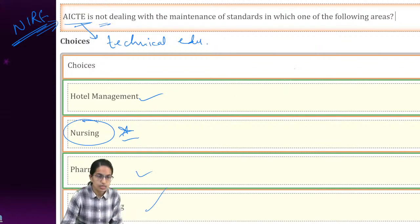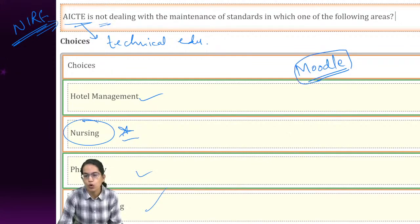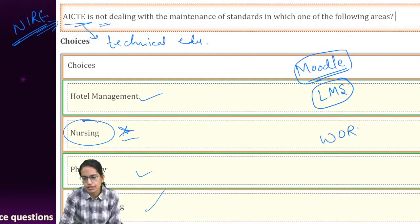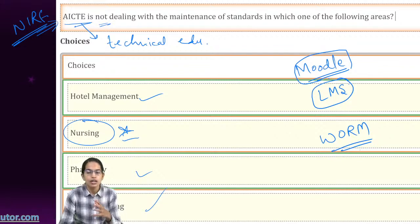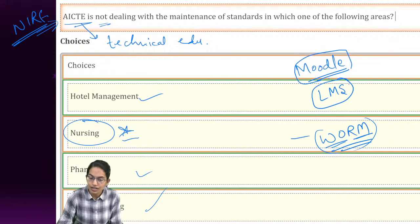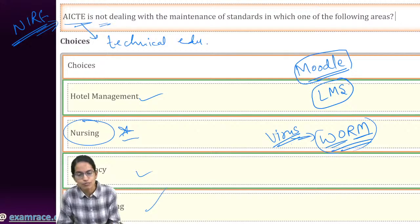There were questions from education on MOODLE this time - MOODLE is an open-source software which is a learning management system. From computers, there was a question on WORM and its full form: Write Once, Read Many. WORM is an important term used in the context of viruses. Check our class on viruses and malwares - we have covered all kinds in very detailed format.